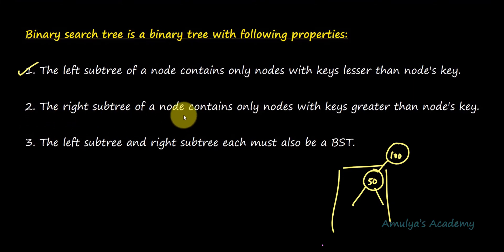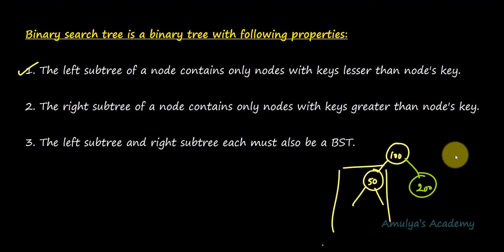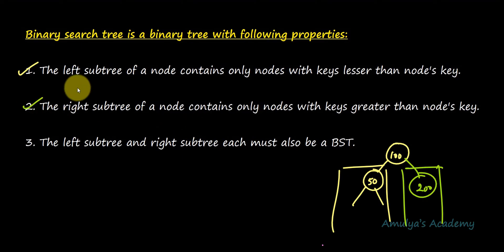The second property is the right subtree of a node contains only nodes with keys greater than the node's key. On the right side it should contain only those nodes whose keys are greater than this node — for example, 200. So in the left side we need values less than the node's key, and on the right side we need values greater than the node's key.